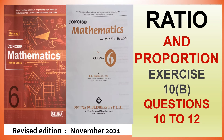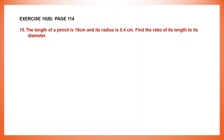Hello students, let's do ratio and proportion. Exercise 10b, we are on question 10. This is found on page number 114. Question 10: the length of a pencil is 18 cm and its radius is 0.4 cm. We have to find the ratio of its length to its diameter.